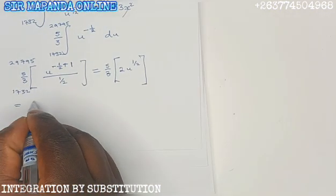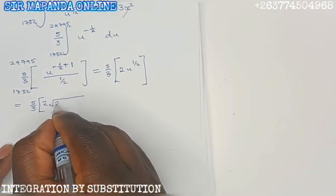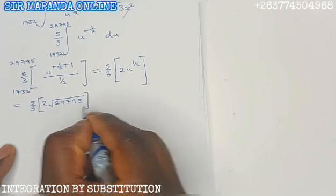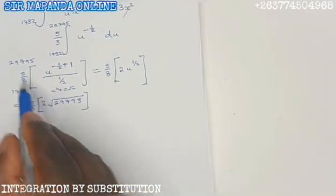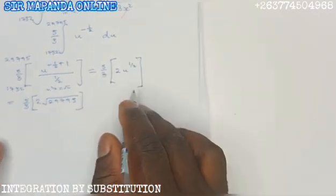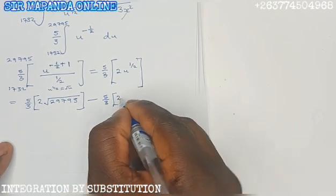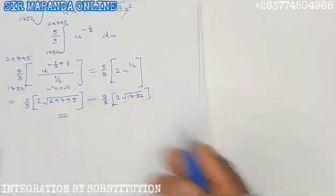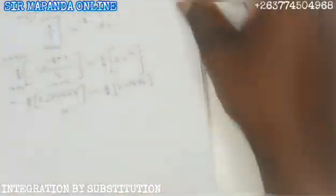To find the answer, you are now saying 5 over 3 open bracket 2 square root 29,795, because u to the power of half is equal to square root of u. You are putting the upper limit in the square root of u. You get this as your first substitution. Minus 5 over 3 open bracket 2 square root of 1732. I am going to punch everything in the calculator and give my answer to decimal places required. They want you to give your answer to 3 decimal places.